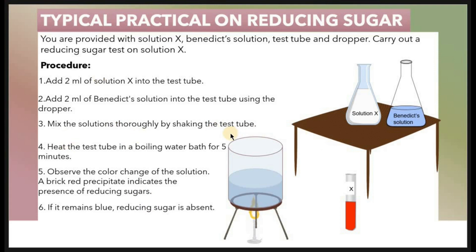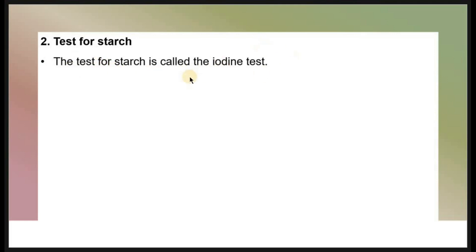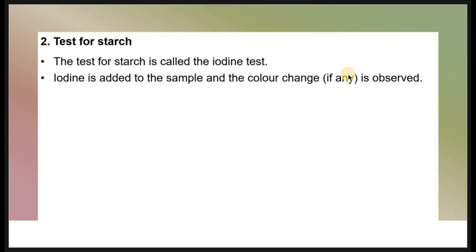These are the main steps involved — they may of course appear different, but that is the main theory and procedure behind the practical. Next, let's look at testing for starch, which is also one of the very common practicals in biology. The test for starch is called the iodine test, because iodine is the reagent used. Iodine is added to the sample and the color change, if any, is observed.